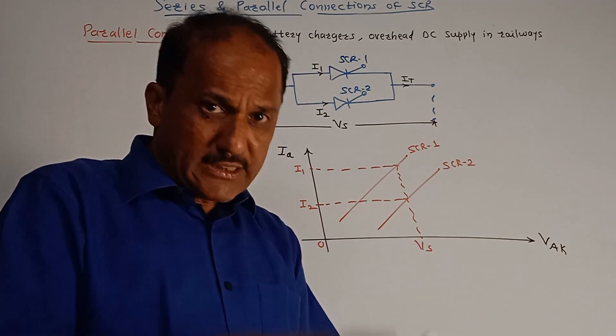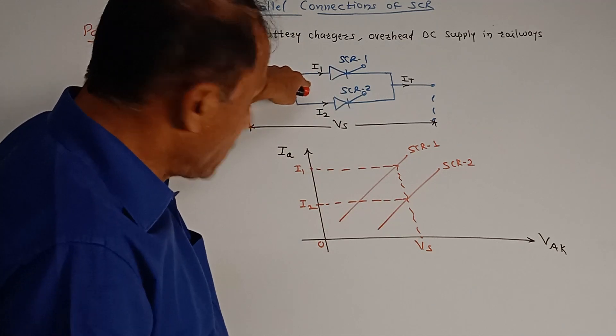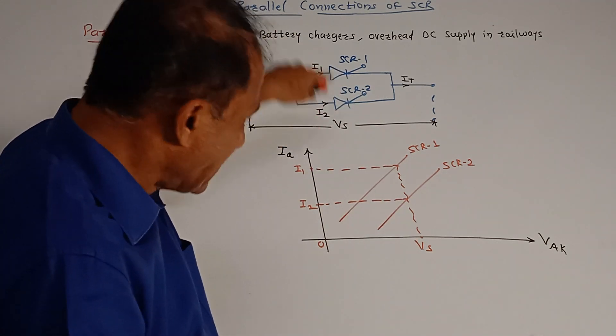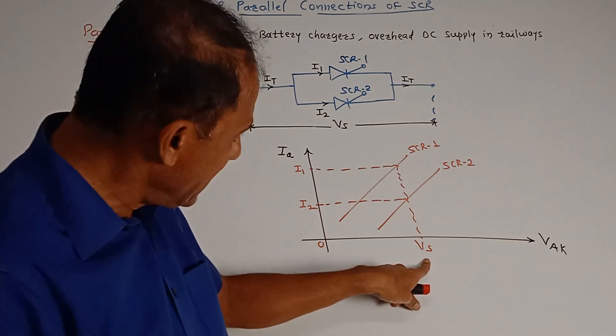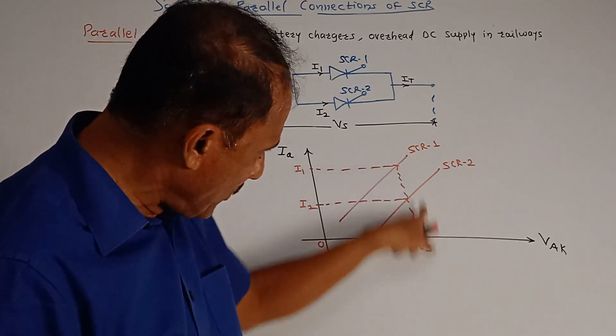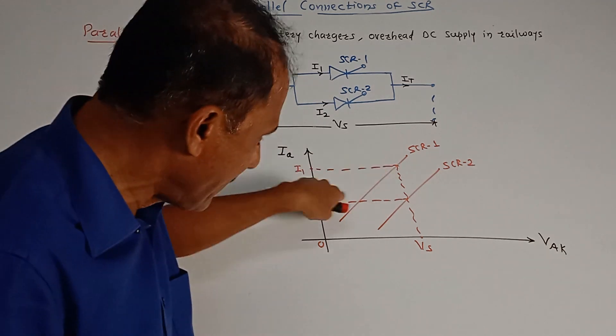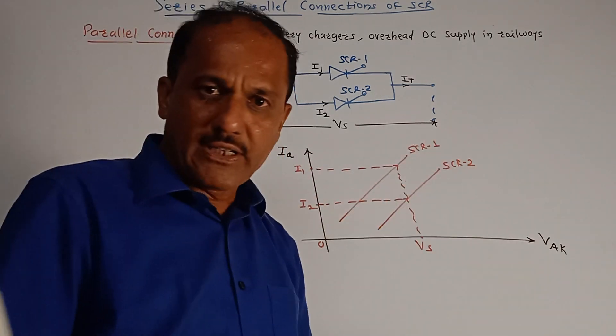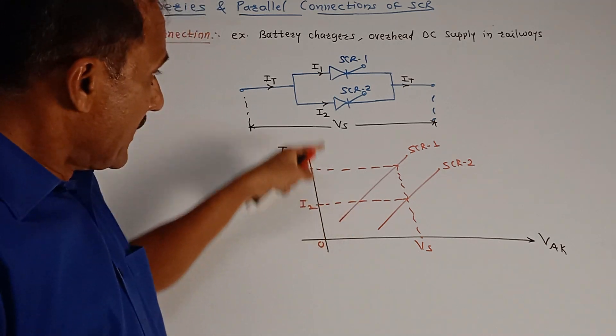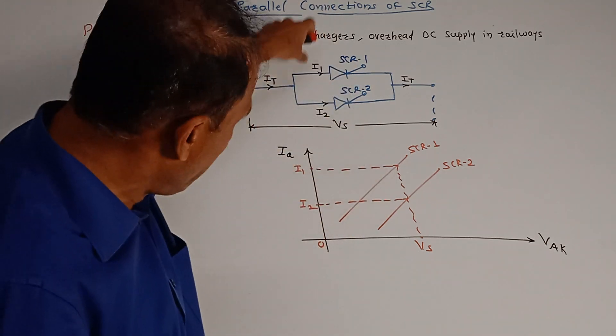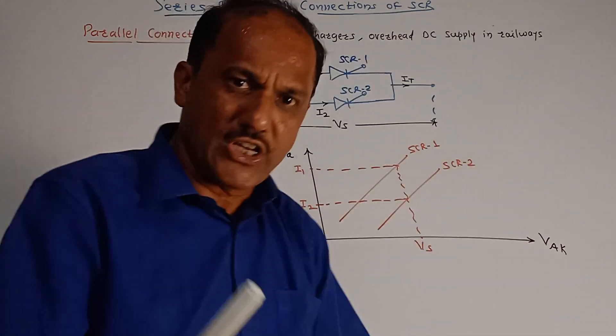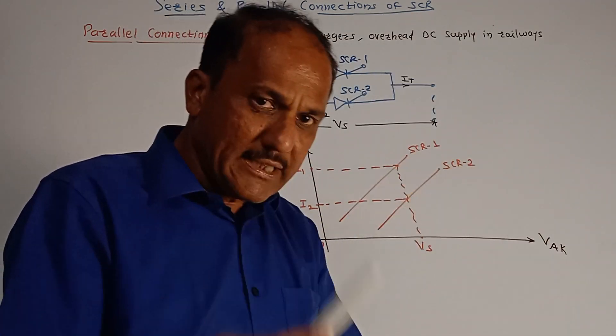In such cases, suppose current I1 is more than current I2. So in such cases, Vs is the string voltage. The voltage remains same, but values of I1 and I2 corresponding to SCR1 and SCR2 are different. So in such cases, since value of I1 is larger than I2, current flowing through SCR is larger, its temperature goes on increasing.